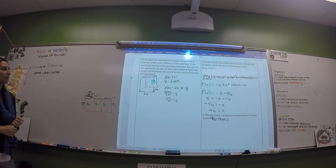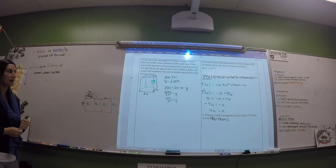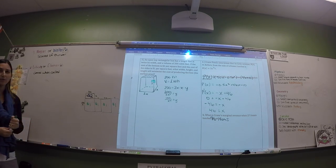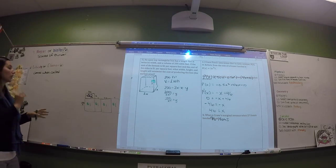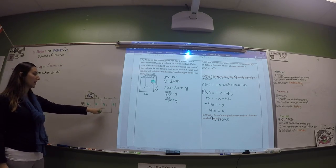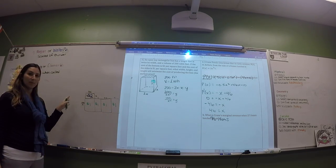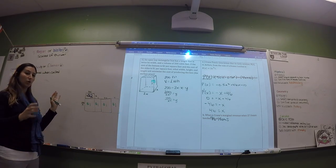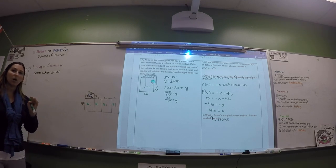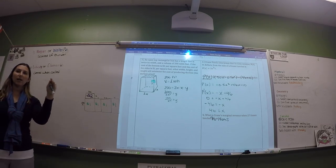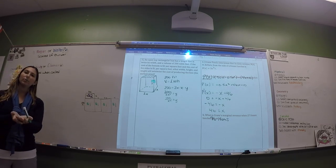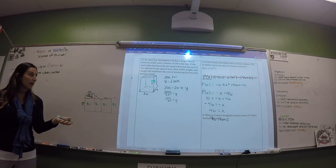We want to know the width, height, and length that will minimize the cost of producing the box — essentially minimizing the surface area cost. First, figure out the surface area of the box, then multiply by the cost. That creates a cost-of-production equation. Then find the minimum by differentiating and solving.